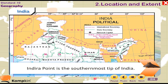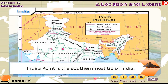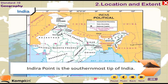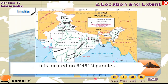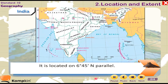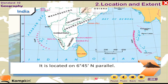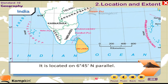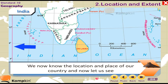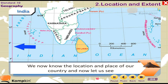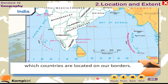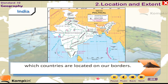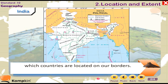Indira Point is the southernmost tip of India, located at 6 degrees 45 minutes north parallel. Now we know the location of the country, and let us see which countries are located on our borders.